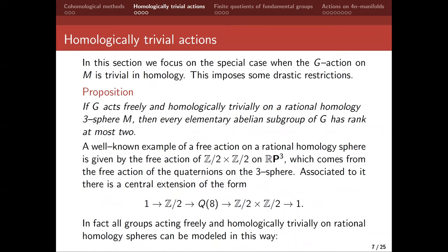So now we're going to switch to being topologists — that's enough algebra. We want to go back to something we can maybe understand, which is the case of actions which are trivial in homology. That means the homology module, thought of as a module, has an action which is trivial — it's a torsion module and the G action is trivial. This poses some drastic restrictions. The first one is: if G acts freely and homologically trivially on a rational homology three-sphere, then every elementary abelian subgroup of G has rank at most two.